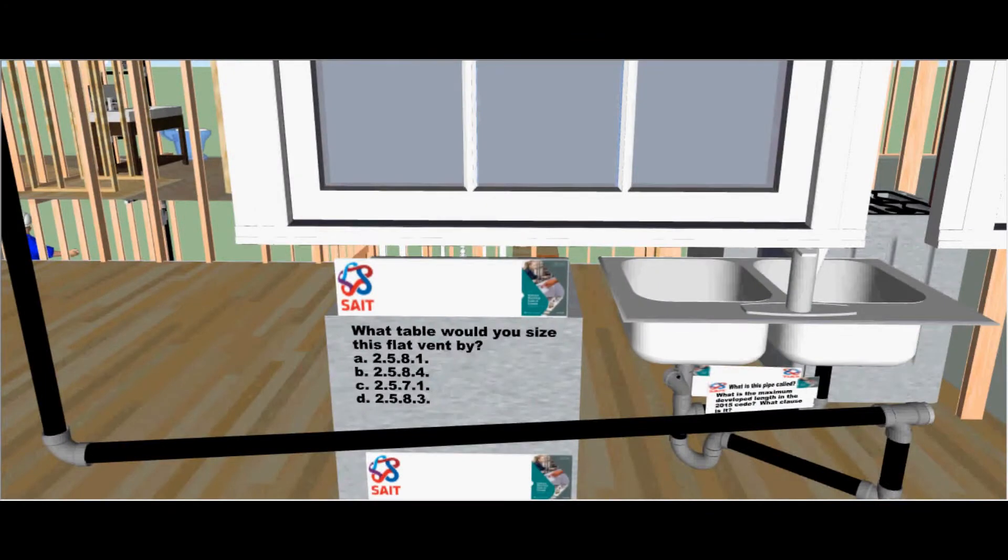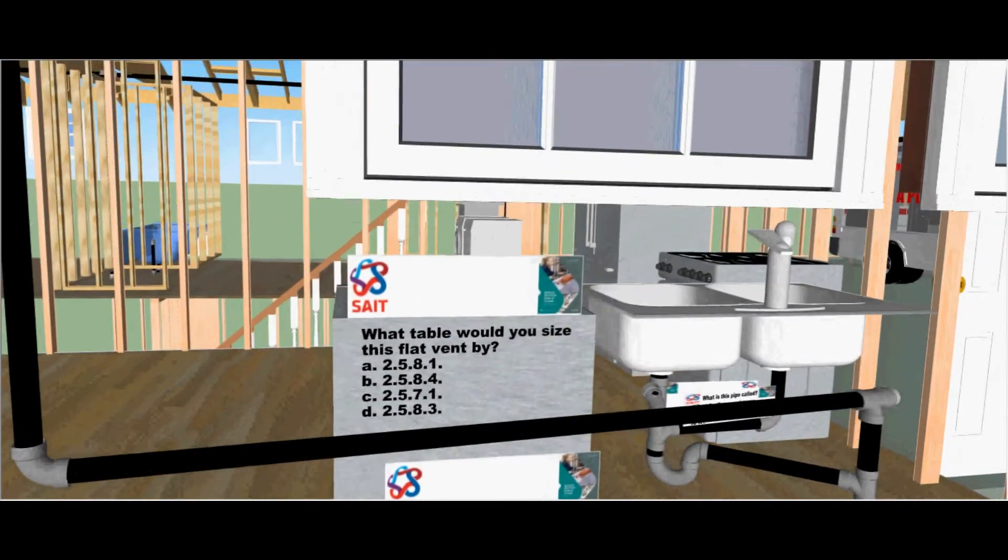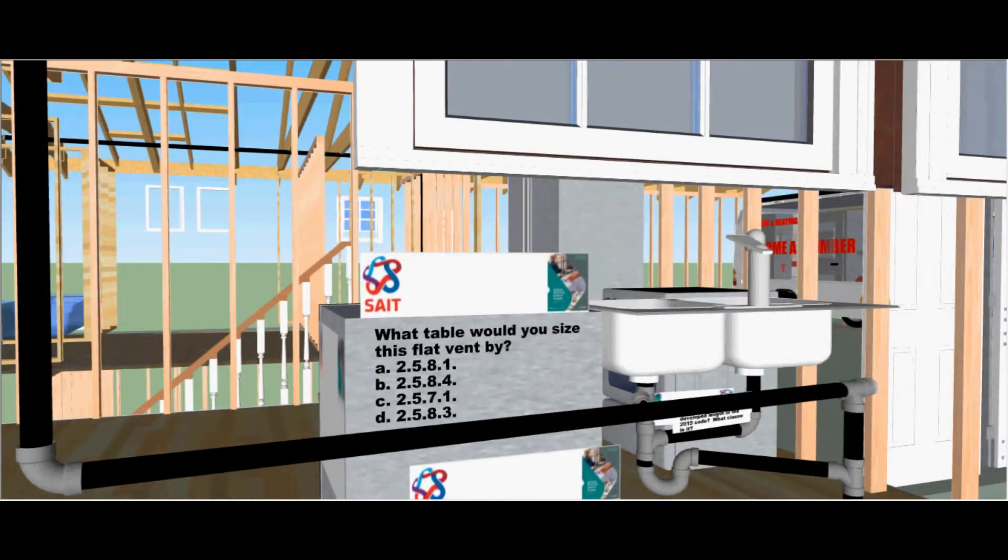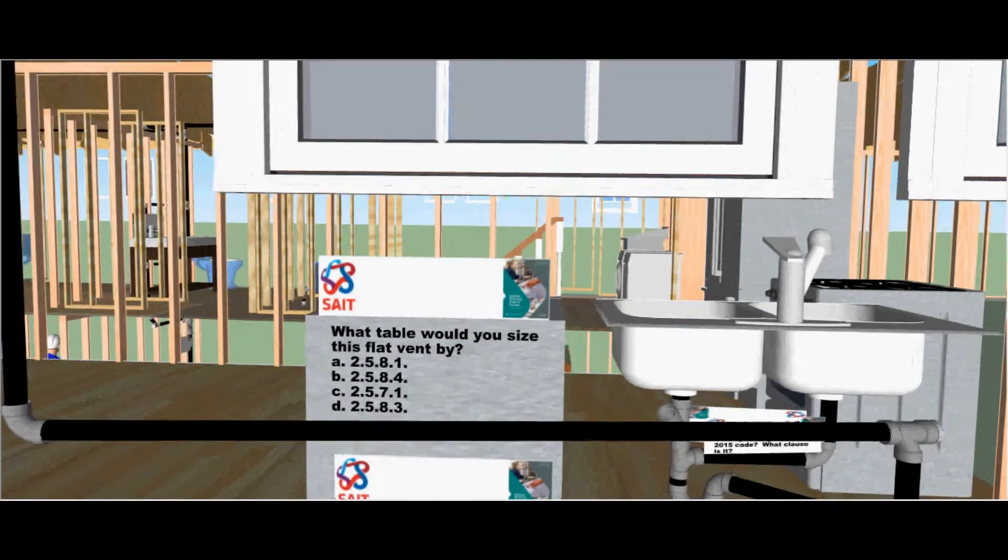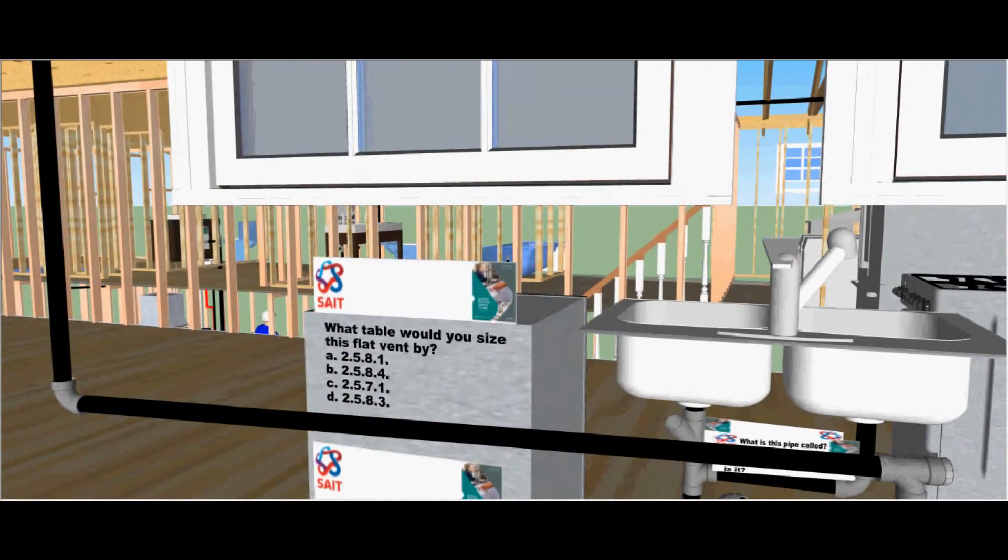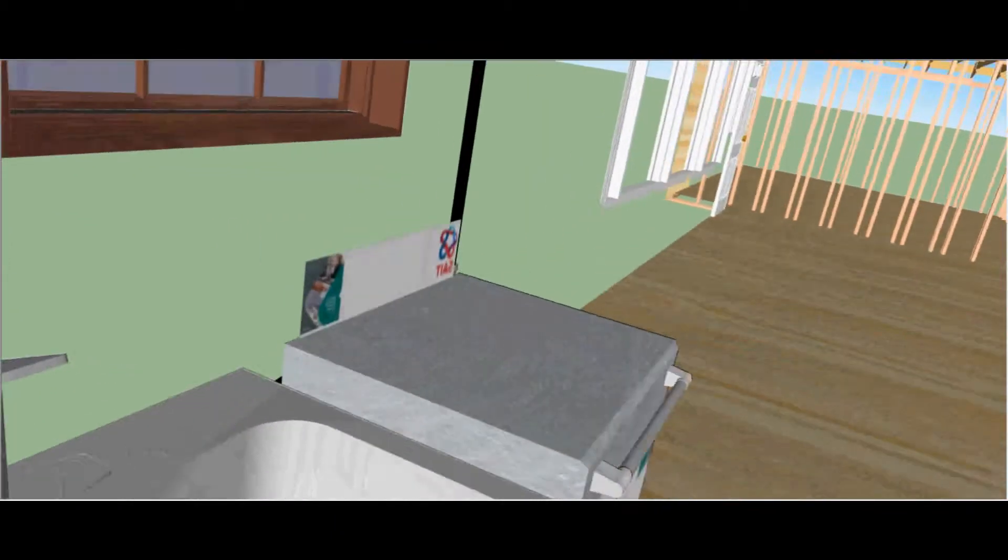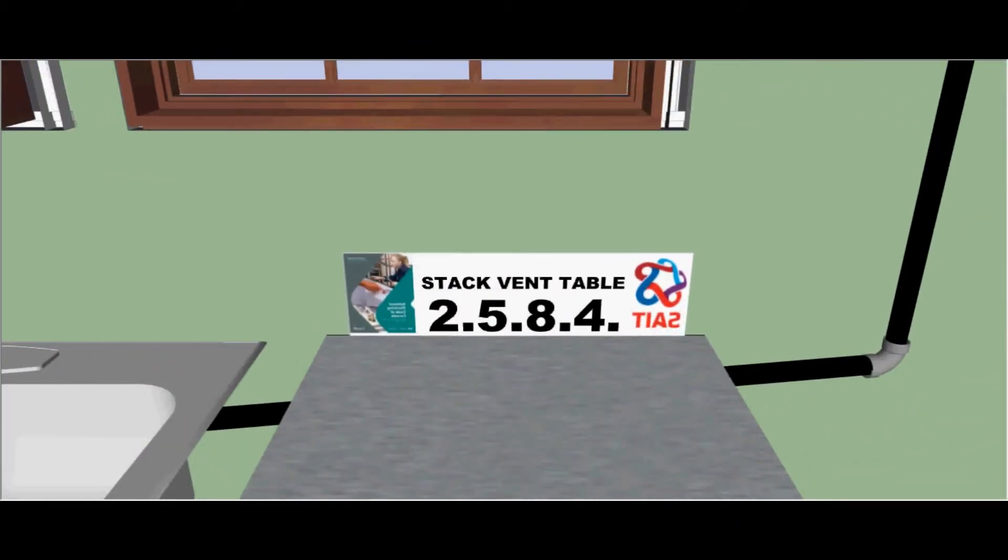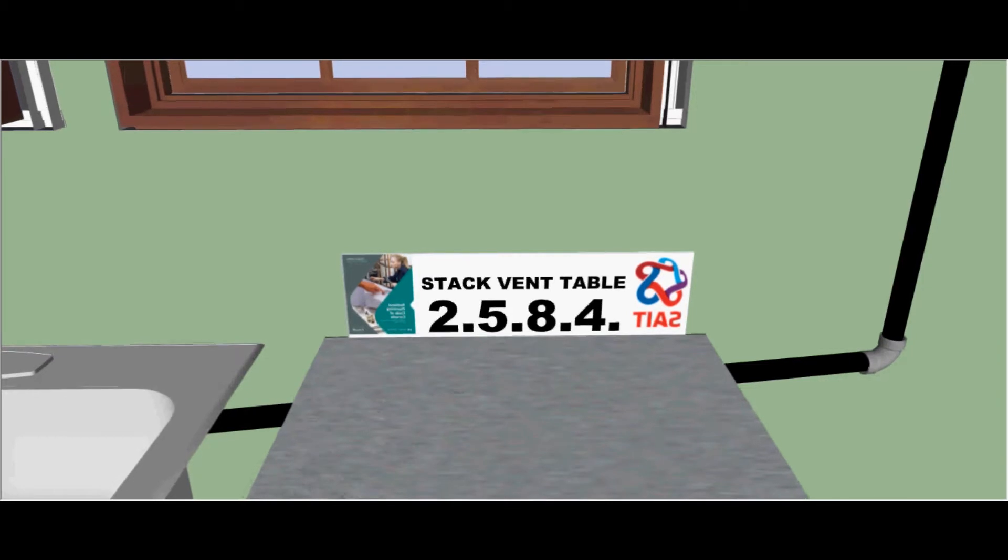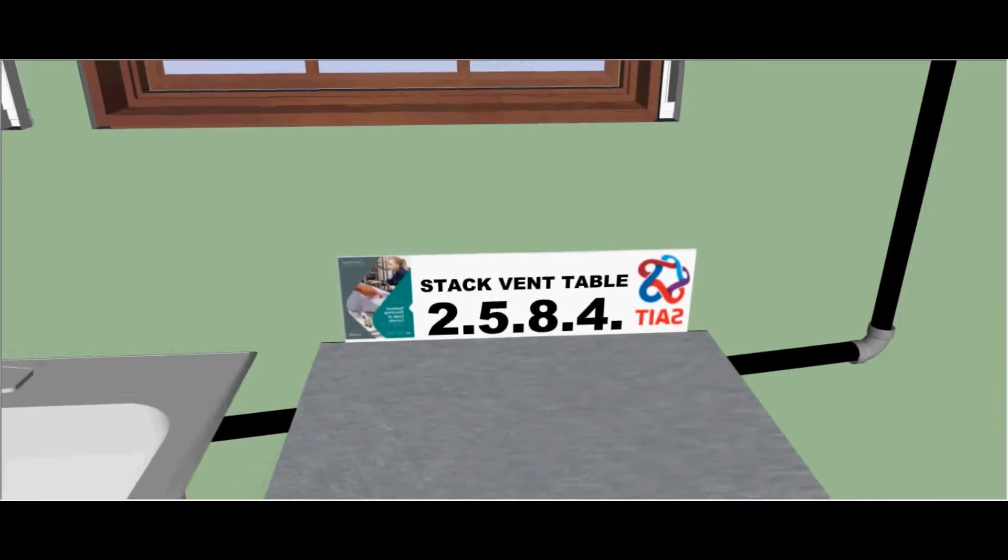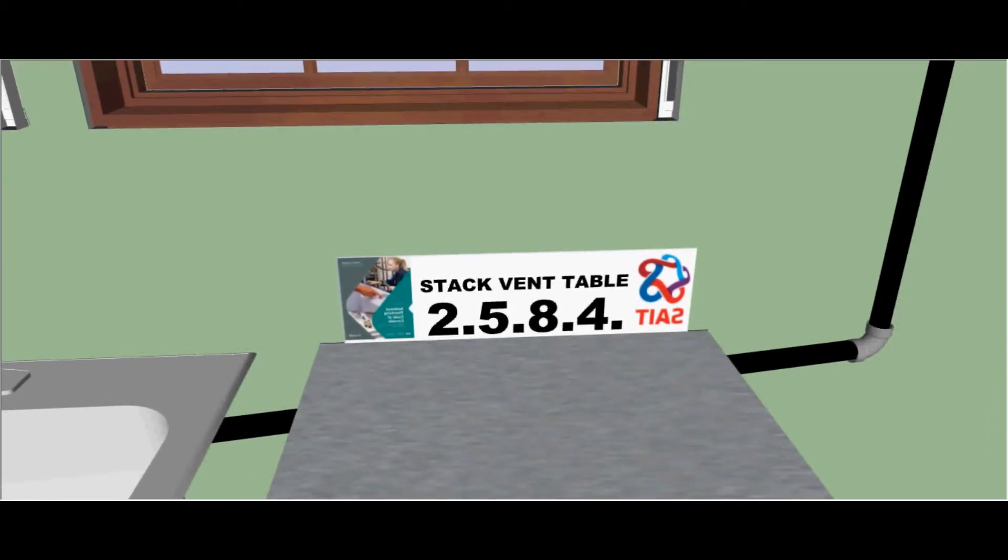What table would you size this flat vent by? Table 2581, 2584, 2571, or 2583 of the 2015 National Plumbing Code? This is a stack vent or a flat vent acting as a stack vent, sized by table 2584.